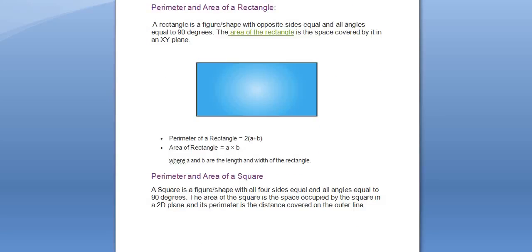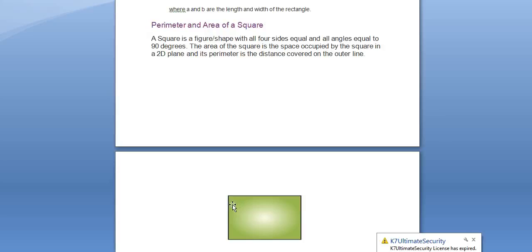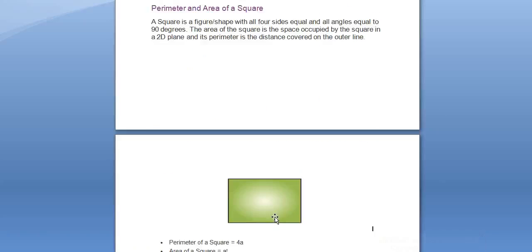Moving on to the square part. A square is a figure in which all four sides are equal and all angles are equal to 90 degrees. All sides are equal in a square, while in a rectangle only opposite sides are equal.